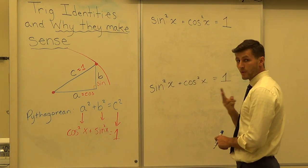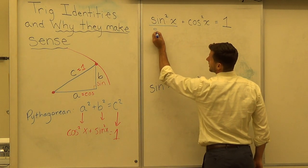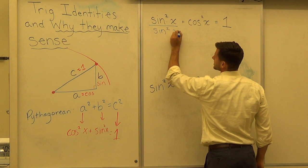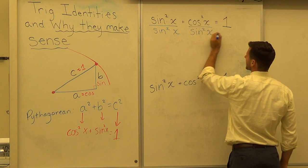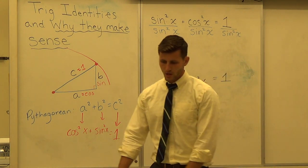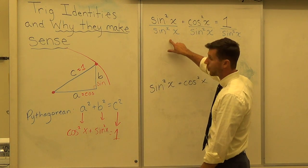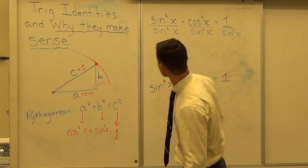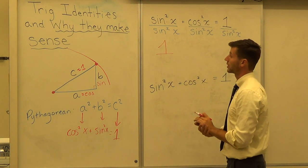Because the second one we get by dividing this by sine squared X. So we're going to divide every single part by sine squared X. When we do that, the first term is going to become one. Because we divided sine squared X by itself. So we have one. The fraction is a whole.